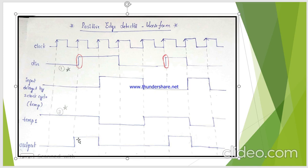My TMP1 signal is what I got from the NOT gate output. Now I am performing the logical AND operation between the D input and the TMP1 signal. This is how I can detect the positive edge output through an input signal. At every positive edge, the output will become high for one clock cycle.